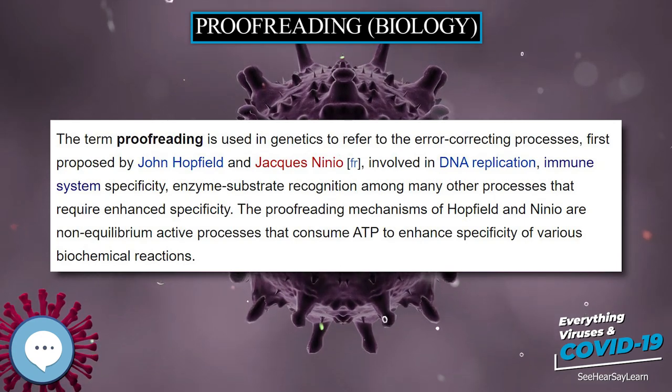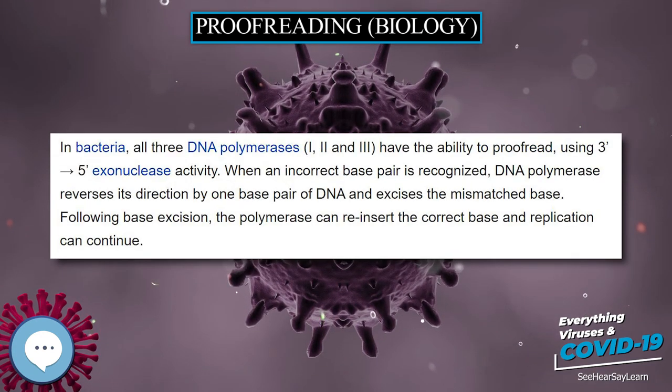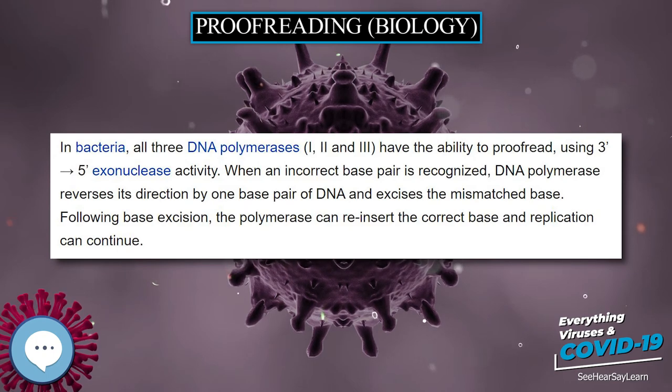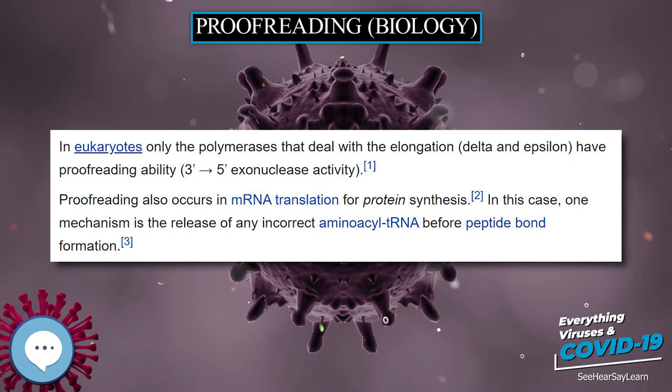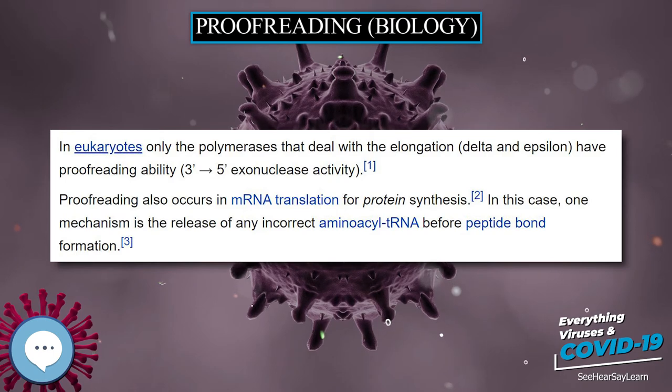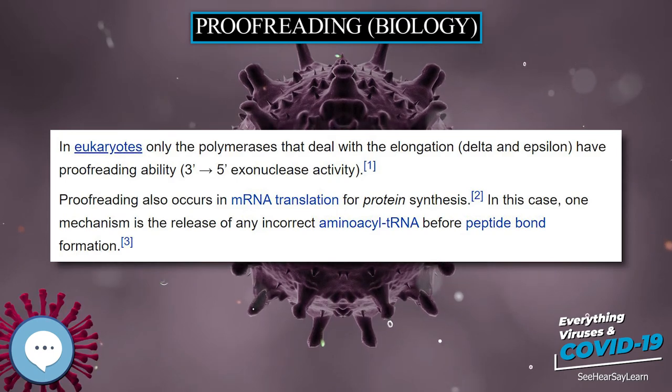In eukaryotes, only the polymerases that deal with elongation — delta and epsilon — have proofreading ability, via 3′–5′ exonuclease activity.